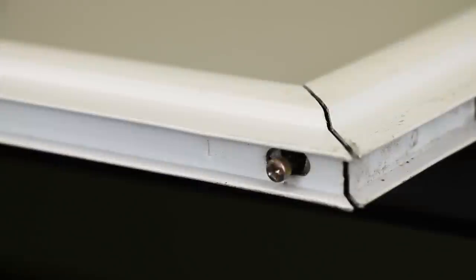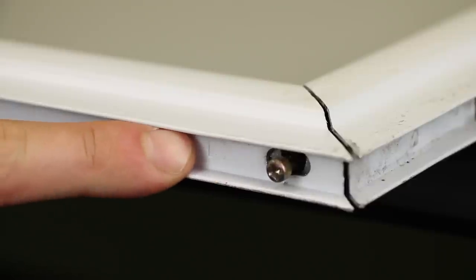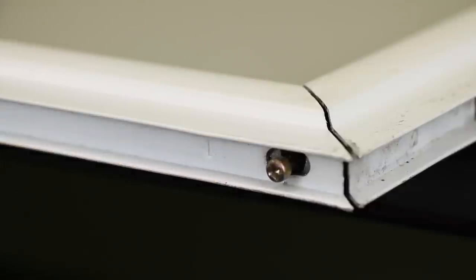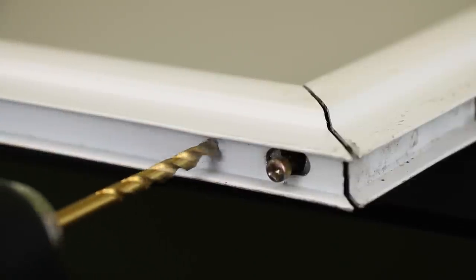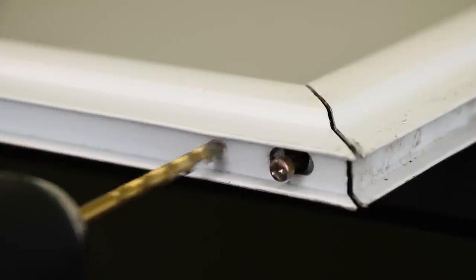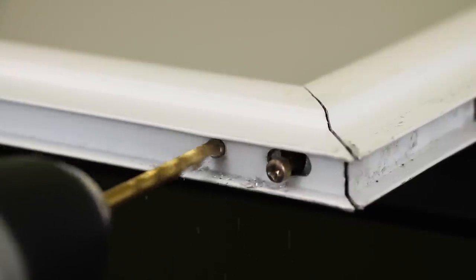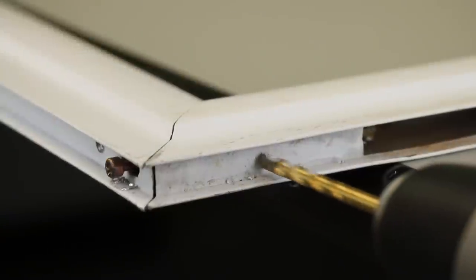Now it's time to remove the corners. This particular frame was punched in to keep these corners in place, so to loosen them up I'm going to take a drill and a 3/16th inch drill bit and drill just enough into the punch mark to release the pressure on the corners.